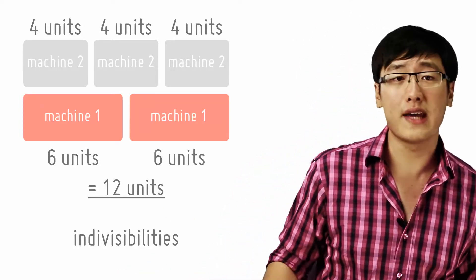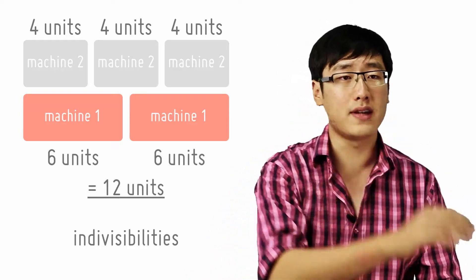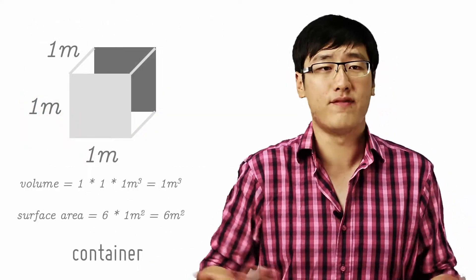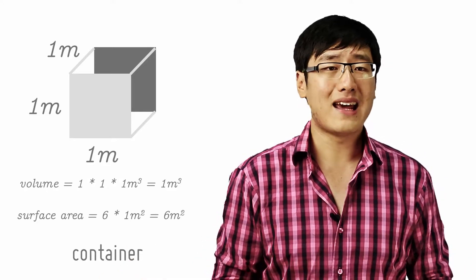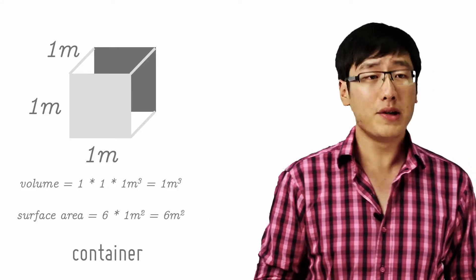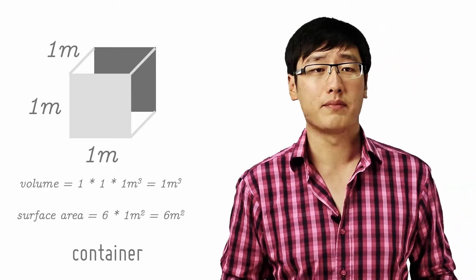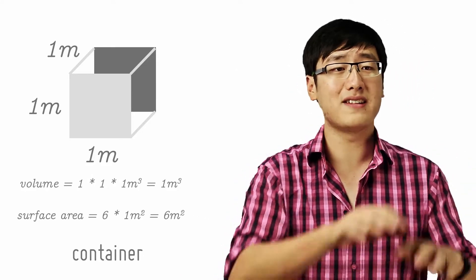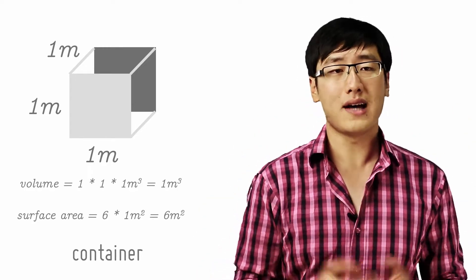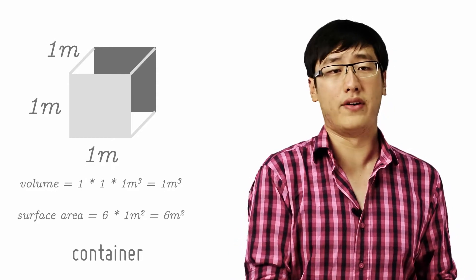There is also the container principle. Any capital equipment used to contain something, for example blast furnaces, oil tankers, pipes, beds and so on, tends to cost less per unit of output the larger its size. The reason has to do with the relationship between volume and surface area. A container's cost depends largely on the materials used to build it, hence the surface area. Its output depends, however, on its volume.